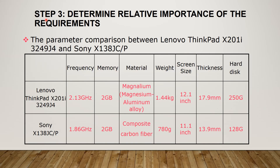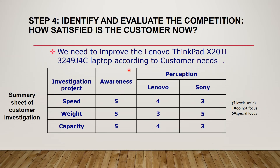In step 3, we need to determine the relative importance of the requirements. This is done by listing the technical specifications of the Lenovo ThinkPad X201i-3249J4C and the Sony X138JCP as listed on their official websites. For step 4, we identify and evaluate the competition — that is, how satisfied is the customer now. Survey forms are handed to customers using Lenovo and Sony laptops, and the results are summarized and tabulated.